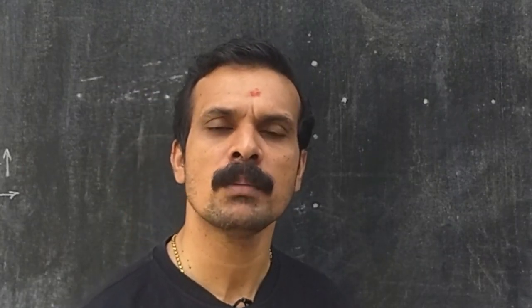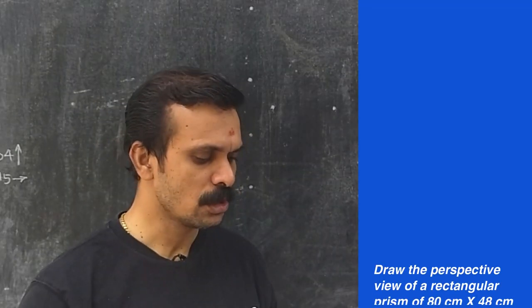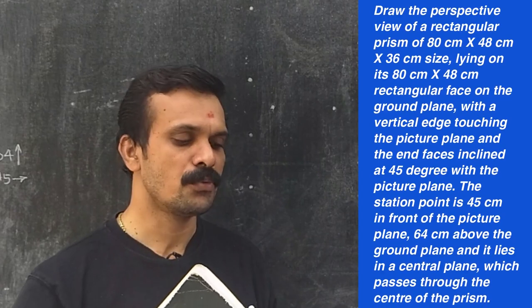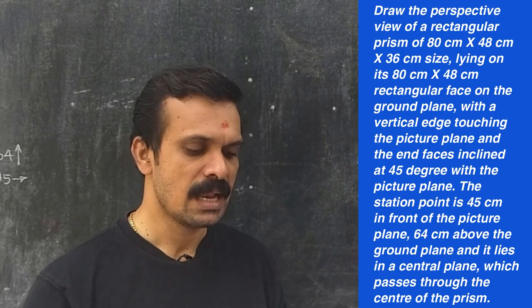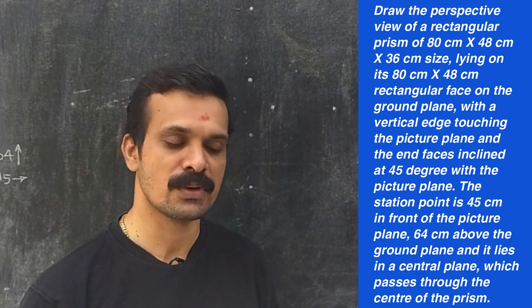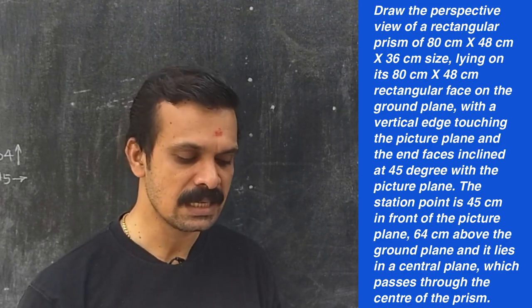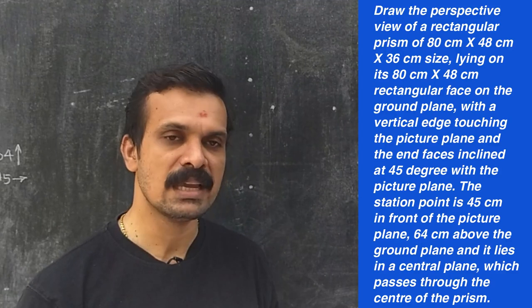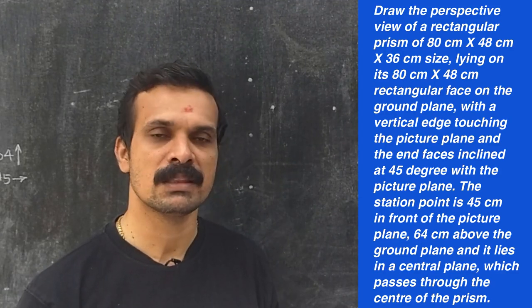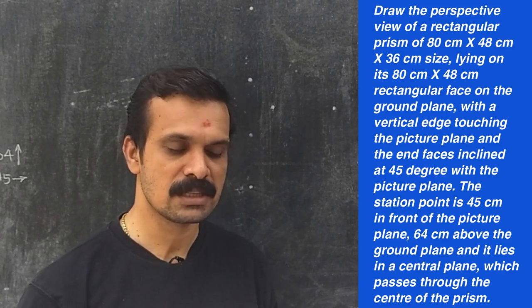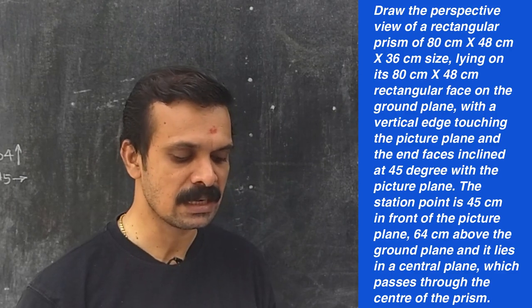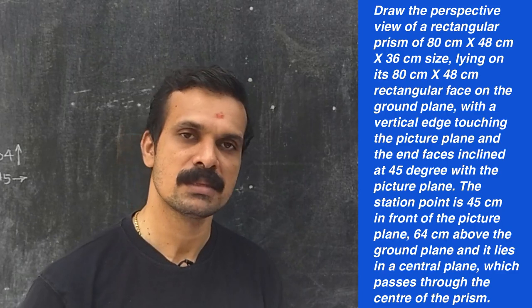Now we are moving to another problem where a rectangular prism is placed inclined to the ground. The problem is: draw the perspective view of a rectangular prism of 80 cm × 48 cm × 36 cm, lying on its 80 cm × 48 cm rectangular face on the ground plane with a vertical edge touching the picture plane and the end faces inclined at 45 degrees with the picture plane. The station point is 45 cm in front of the picture plane, 64 cm above the ground plane, and lies in a central plane passing through the center of the prism.